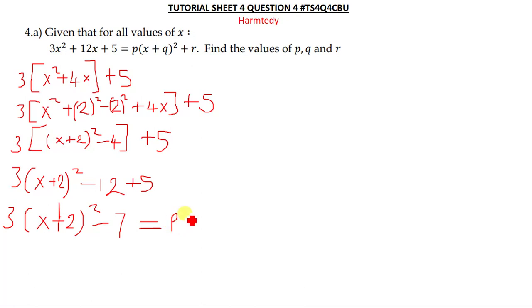So we've been told to say this is equal to p(x + q) squared plus r. Then they are saying find the values of p, q and r. So our p is just equal to 3, then our q is equal to 2, then our r is just equal to negative 7.